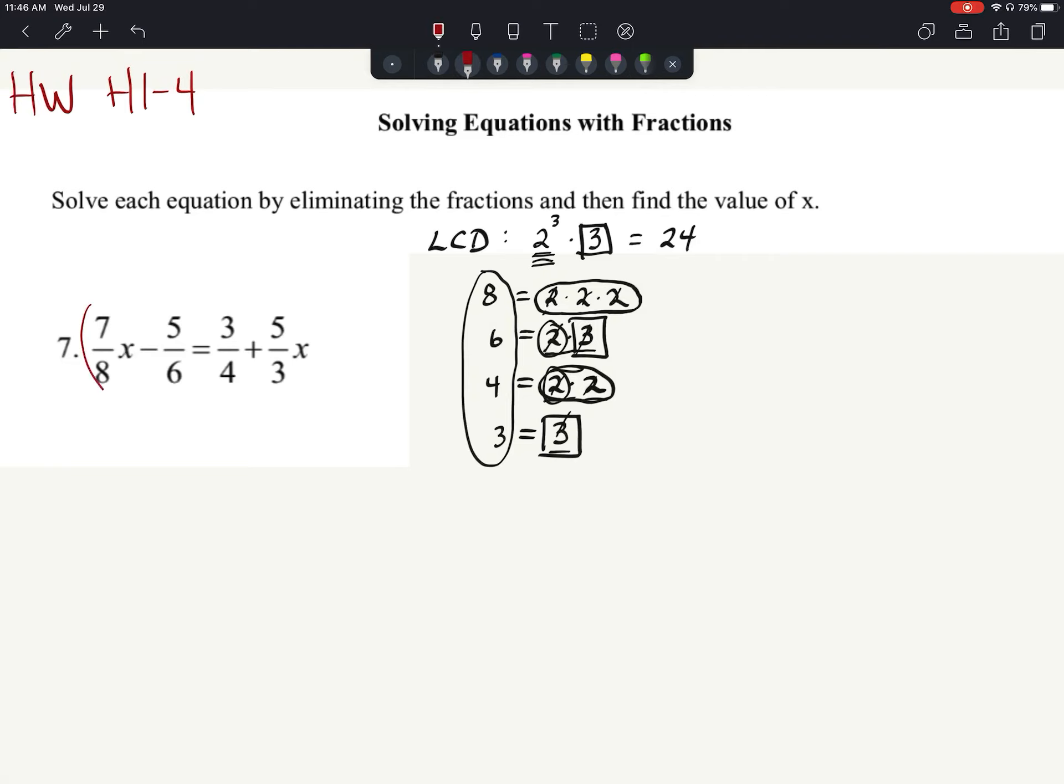I'm going to multiply both sides of this equation by 24. 24 is divisible by 8 - 8 goes into 24 three times, and 3 times 7 is 21, so we have 21x. 24 is divisible by 6, that would be 4, and we multiply by the numerator 5, so we get minus 20. Over here, 24 divided by 4 is 6 times 3, which is 18. And 24 divided by 3 is 8, and 8 times 5 is 40, so we have plus 40x.